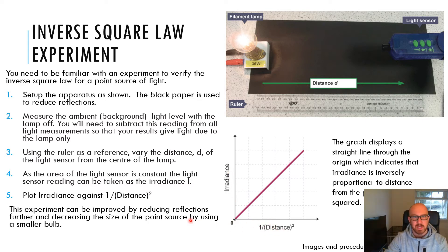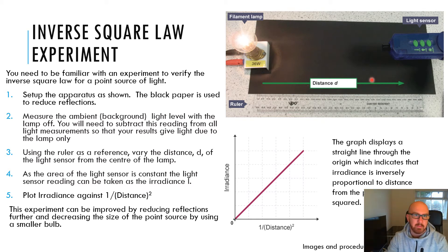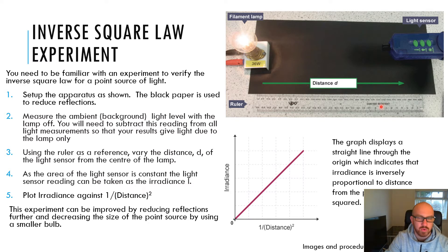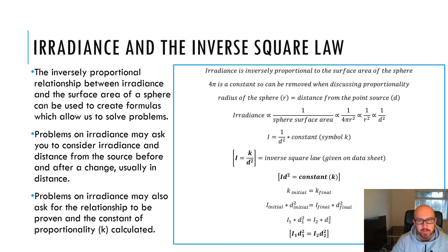To improve this experiment, you could reduce reflections further — for example, close blinds or curtains and put more black paper down. You could also use a smaller filament lamp or smaller bulb, which makes it more of a true point source, reducing the size of the source and making the point source approximation more accurate.